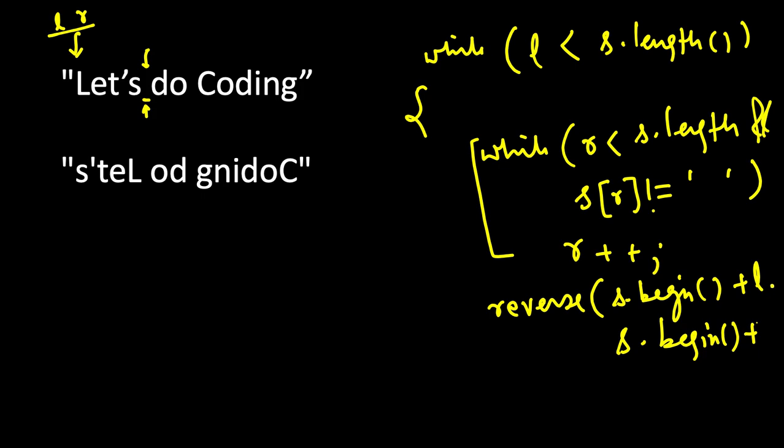So we have reversed the first word. After reversing, we need to move left here to the next character. r was pointing to the space when this loop exited, so now l should be equal to r plus one and r should be equal to l. So now both l and r are pointing here, just like they were together here. This loop will continue. It will check if left is less than string.length, and then we will try to find a space or the end of the string.